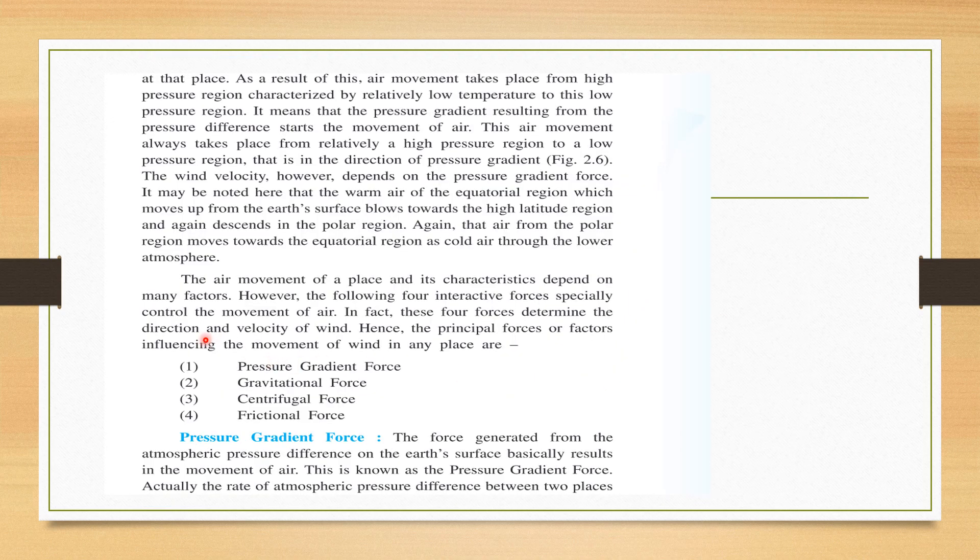So these are the 4 major forces which act upon the air and jis ki wajay se wind ka direction, velocity, impact kerta hai. Pressure gradient force, gravitational force, centrifugal force and frictional force. These 4 forces, ek dushra ke saath intertwined hai, koi alag-alag se act nahi hota hai. But primary, sab se zyadha important force hai, pressure gradient force.